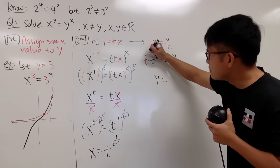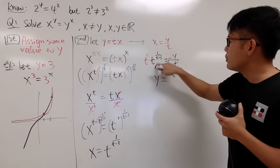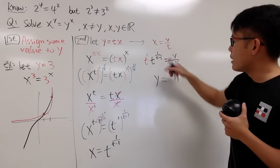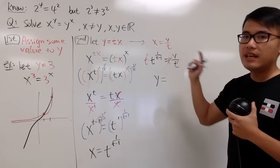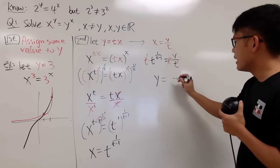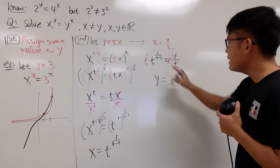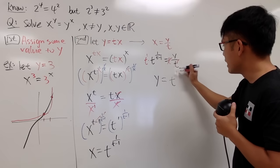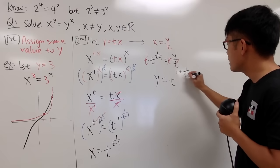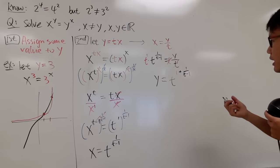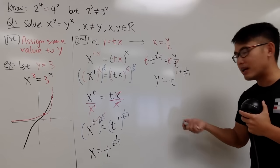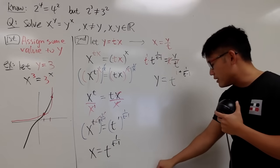And notice, this is just t to the 1st power times t to the 1 over t minus 1 power. And we can just add the exponents now. So altogether, it's going to be t for the base, and then 1 plus 1 over t minus 1.